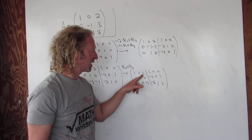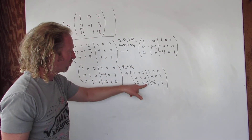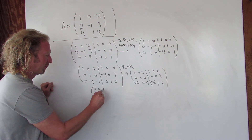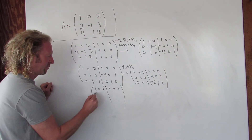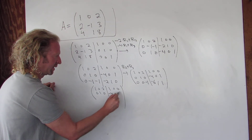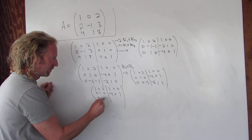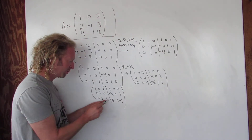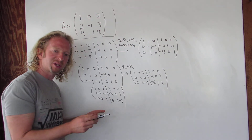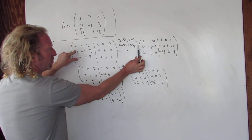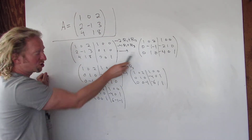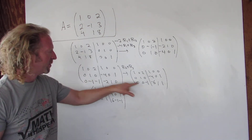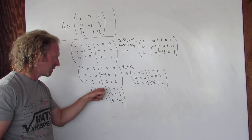Now we're going to make the (3,3) entry a 1 by multiplying the bottom row by negative 1. Now we're in a good place. The last step is to multiply row 3 by negative 2 and add it to row 1 to make the (1,3) entry a 0. The goal was: make this a 1, make these zeros — done. Then make this a 1 by switching rows — done. Make these zeros — done. Now make this a 1 — done. Now make this a 0 and we're finished.